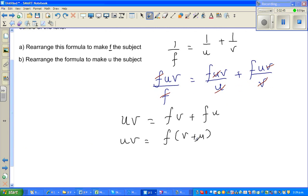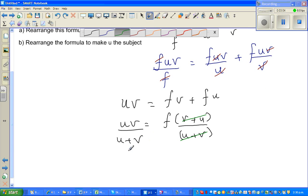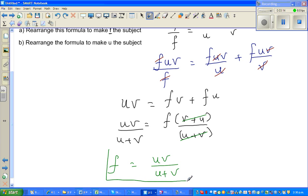And I want to make f the subject, so I'm going to divide both sides by u + v. Now you can cancel: v + u and u + v are the same, so this gets cancelled. So this is your focal length: f = uv/(u + v). That's the answer.